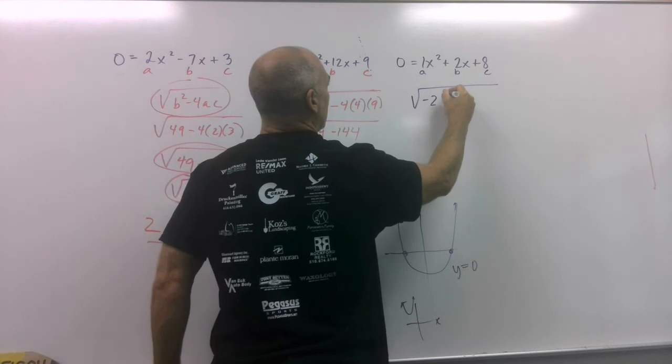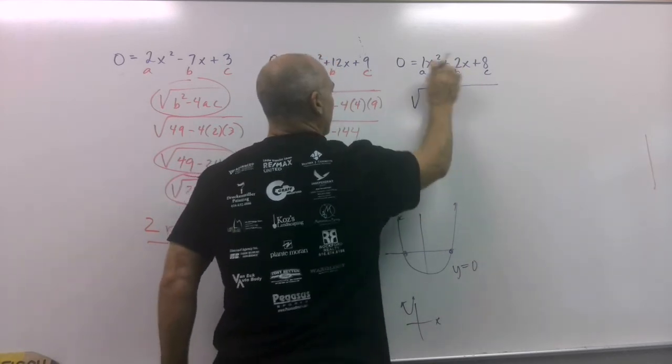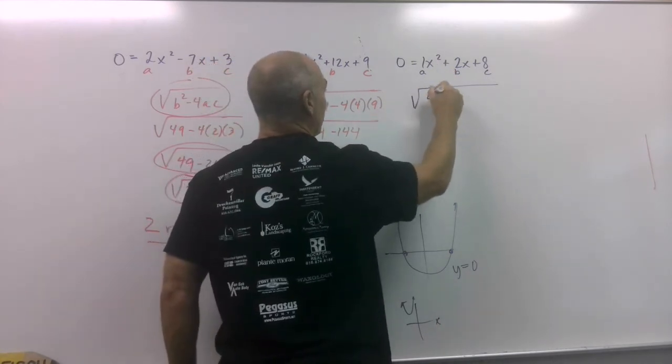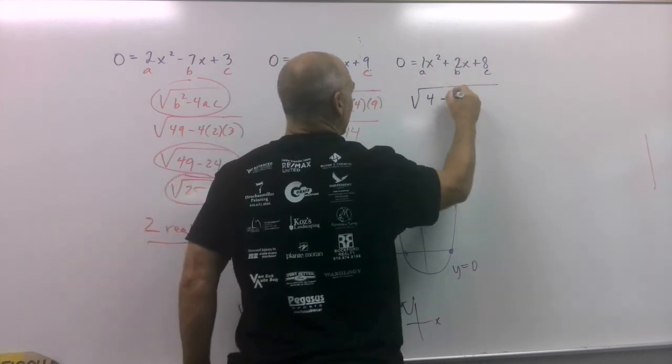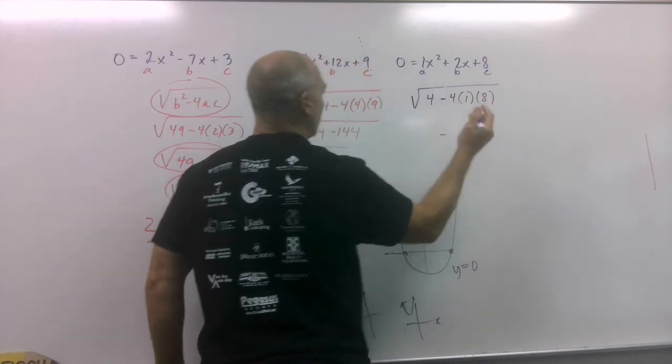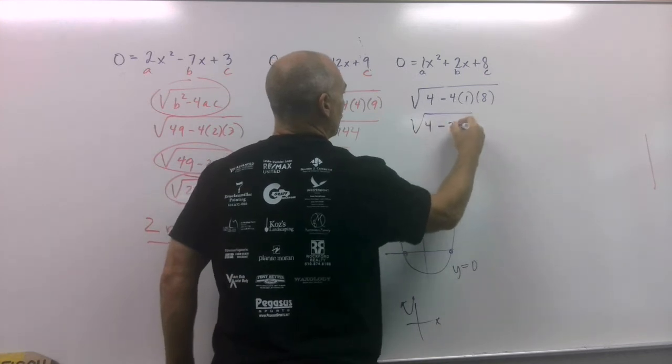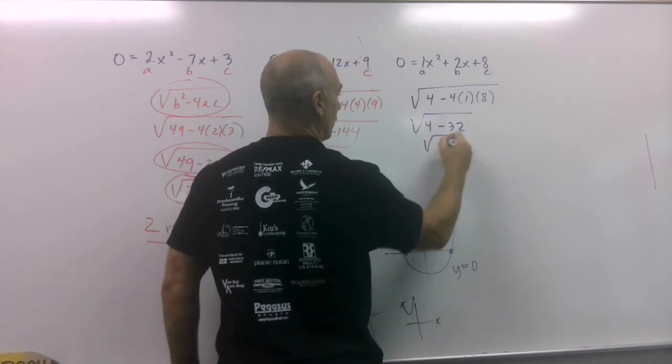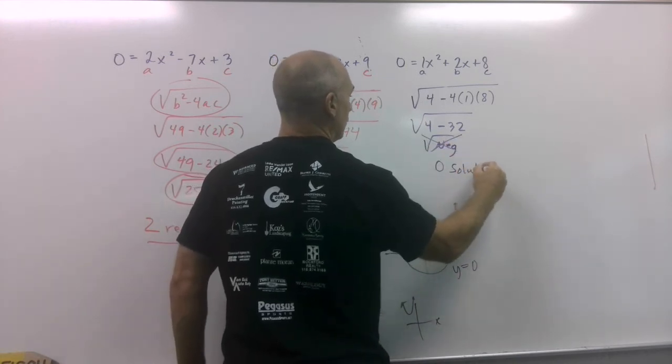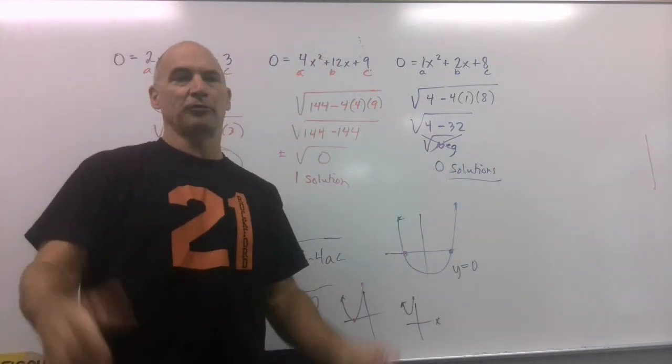Negative b. Oh, boy. I'm getting this part of it all messed up. Negative b, plus or minus the square root of b squared. So that would be 4 minus 4ac, all over 2a, but we don't need it. So that would be the square root of 4 minus 32. And you go, aha, that's going to be the square root of a big old negative. That means there are zero solutions. And that's all you're going to be asked to do for a portion of your lesson.